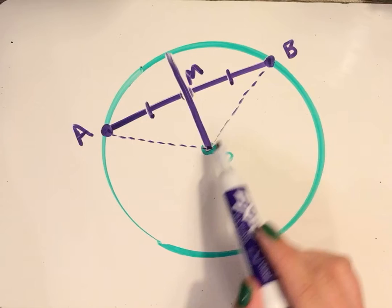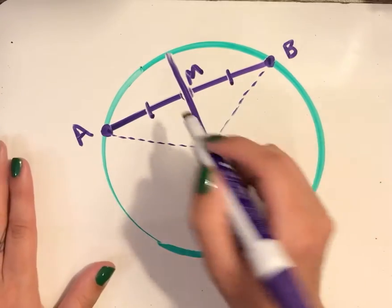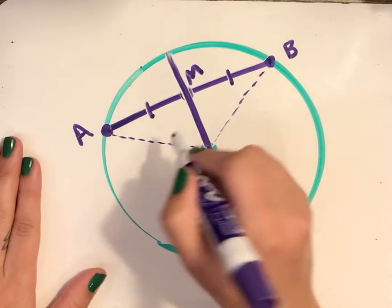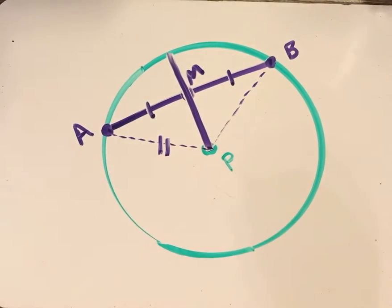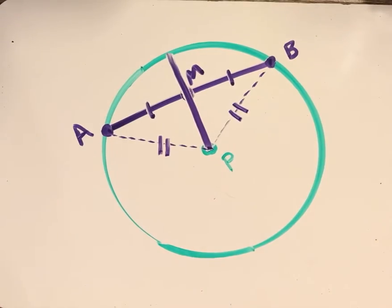Now AP and BP are both radii of the circle. So that means that they have to have the same length. The radius is the same from any point on this circle. So I can also add that segment AP is congruent to segment PB.